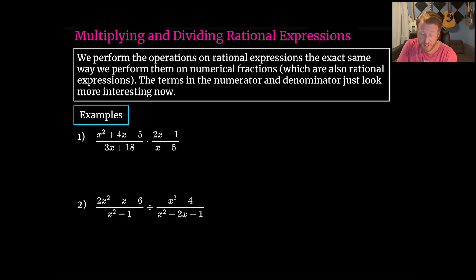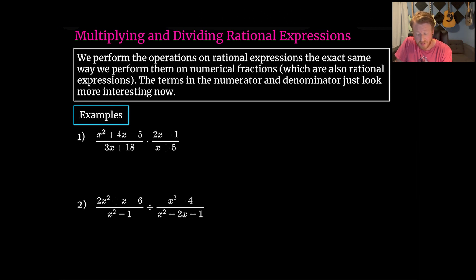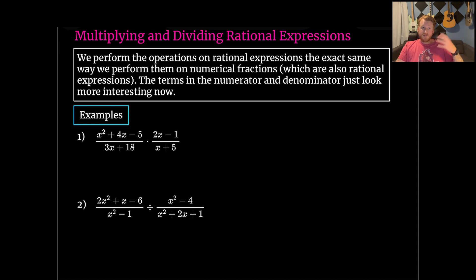Now we'll start multiplying and dividing rational expressions, given our background on simplifying and when it's legitimate to cancel. We're going to perform these operations the exact same way we perform them on numerical fractions — the terms just look more interesting now because they're polynomials. When multiplying fractions, multiply the numerators together and the denominators together, then reduce. It's often easier to find common factors first.